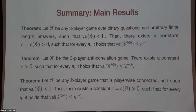Summary of main results: First, every three-player game over binary questions with value(G) < 1 has value(G^n) ≤ n^{-C} for some constant C depending on the base game. Second, for the anti-correlation game specifically, there is exponential decay. Third, for general K-player player-wise connected games, we also get polynomial decay. For the anti-correlation game, the no-signaling value is 2/3 for all n, so our exponential decay result shows a very strong gap between no-signaling and classical strategies.